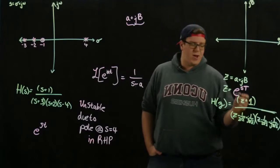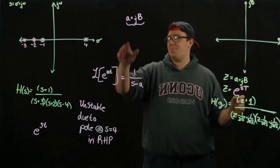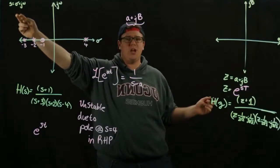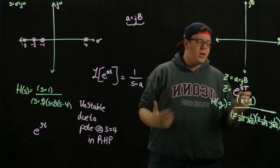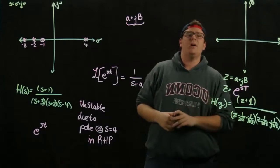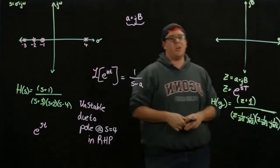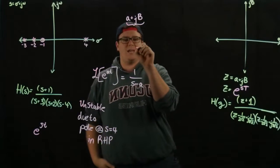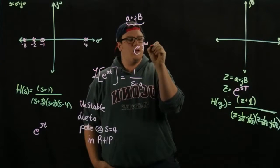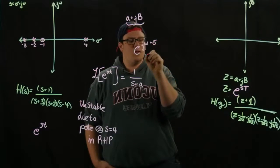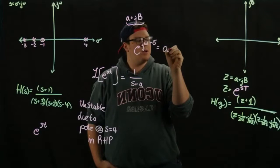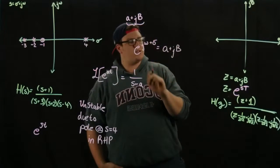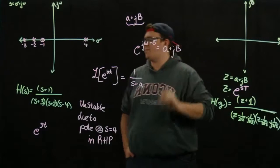If we have E to the S, S being a complex number, sigma plus j omega, all we get is another complex number, which I'm naming a plus jb. So basically what I'm saying is that E to the j omega plus sigma is equal to a plus jb. E to the imaginary complex number just gets you another complex number.